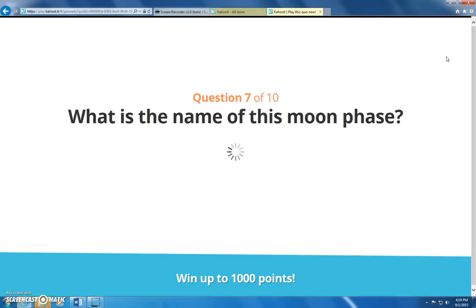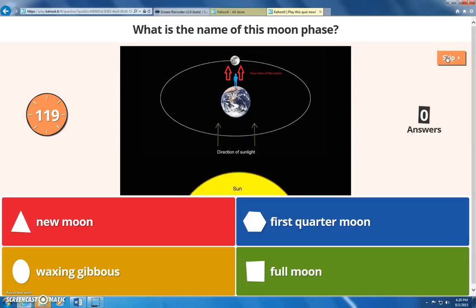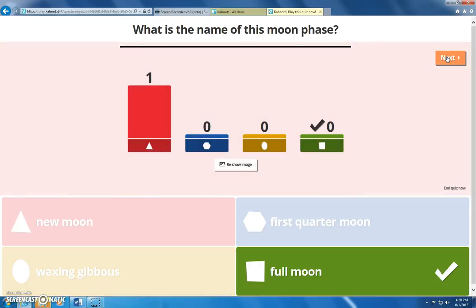Here is our second question from our new knowledge. What is the name of this moon phase that this person is seeing from earth? Is it a new moon? A first quarter moon? A waxing gibbous? Or a full moon? So, something that you could have seen from your reading was that when the moon is fully illuminated, or it's completely white, it's reflecting all of its rays back to earth, and so we call that a full moon.